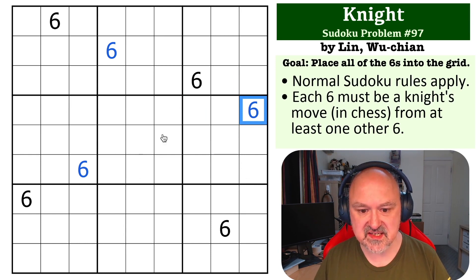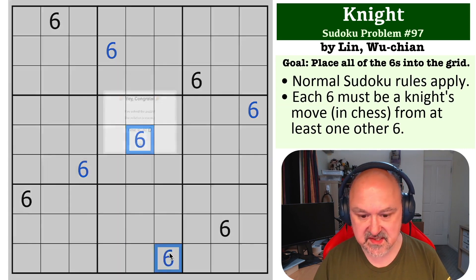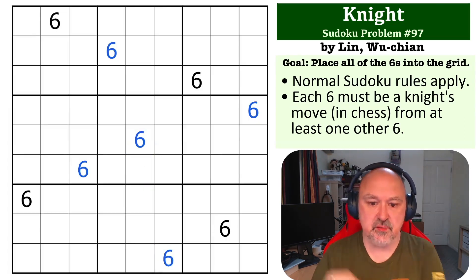Now we've got seven sixes in the grid, and the only ones left that could be sixes are those and those. But this six could only see that cell, that cell, that cell, and that cell. So that can't be the six. These both become sixes, and that is the solution to this problem.